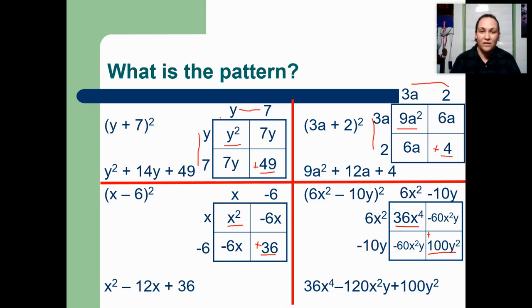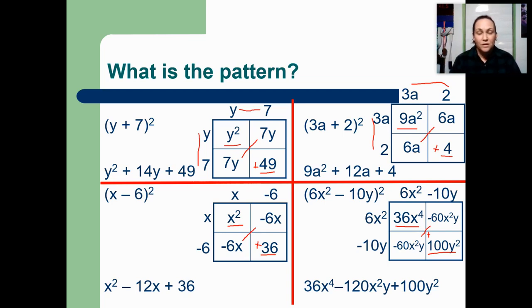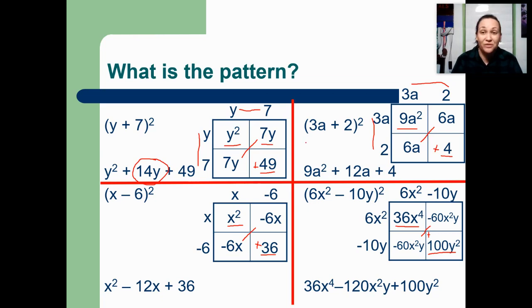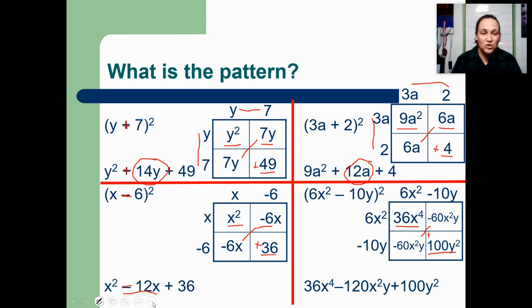The last pattern I'd like to point out is that on our diagonal, our like terms are identical: 7y and 7y; 6a and 6a; negative 6x and negative 6x; negative 60x squared y and negative 60x squared y. So on each of these problems on the diagonal, my like terms are always going to be exactly the same. So instead of adding them together, we could just double them. Our middle term is just 7y times 2 because there were 2 of them. Over here, 12a — that's 6a times 2. Your middle term is going to be negative if your middle sign was negative, and it's 6x times 2 is 12x.